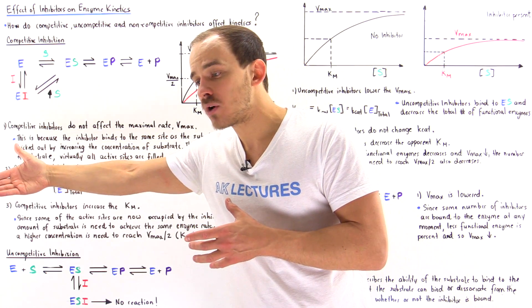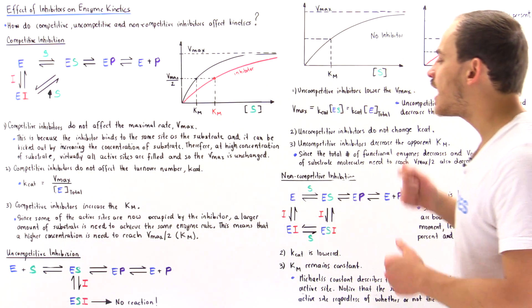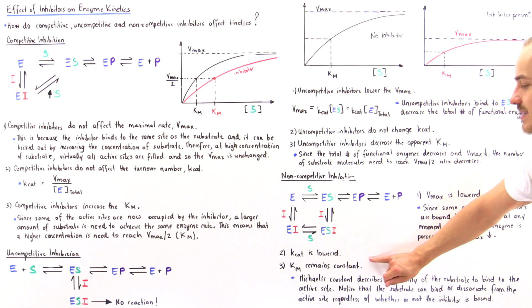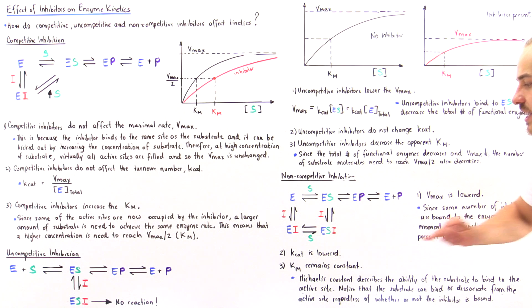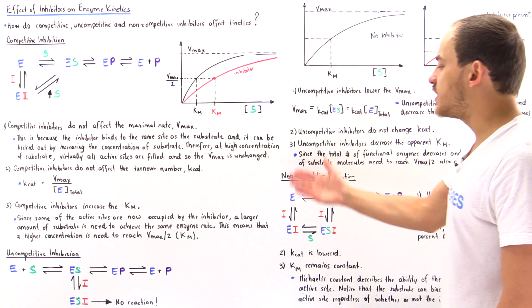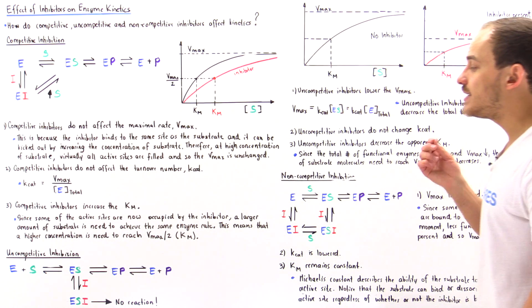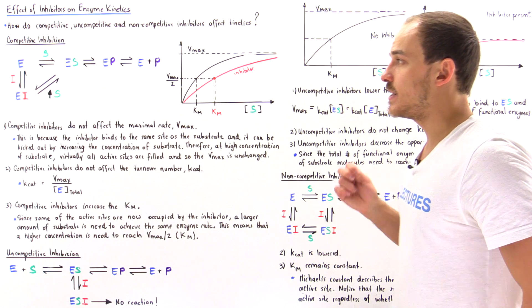The efficiency to transform into that product will not be as high. And that's exactly why the K-Cat is lowered in the presence of a non-competitive inhibitor.